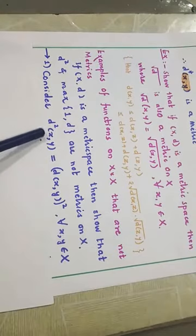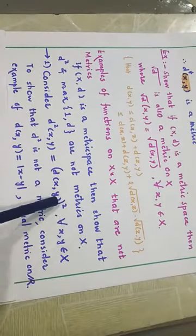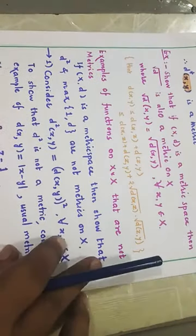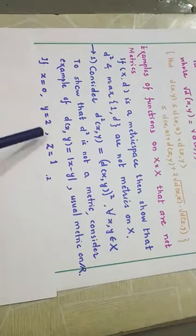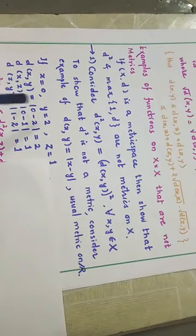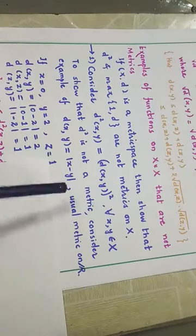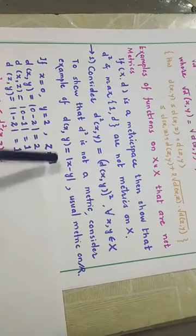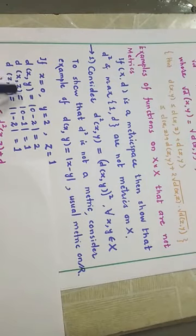For D², defined as D²(x,y) = [D(x,y)]², we consider the usual metric on ℝ, which is D(x,y) = |x−y|, and show that the triangular inequality does not hold. Take x=0, y=2, z=1. Then D(x,y)=|0−2|=2, D(x,z)=|0−1|=1, D(z,y)=|1−2|=1. So D²(x,y)=4, D²(x,z)=1, D²(z,y)=1.